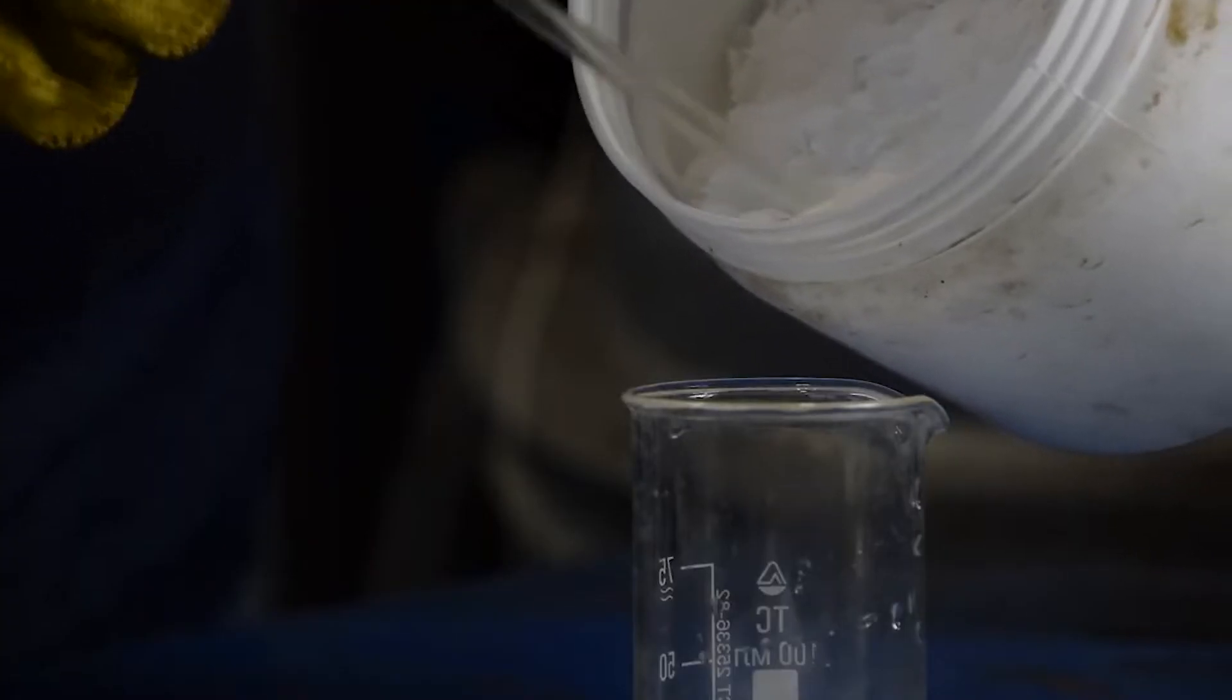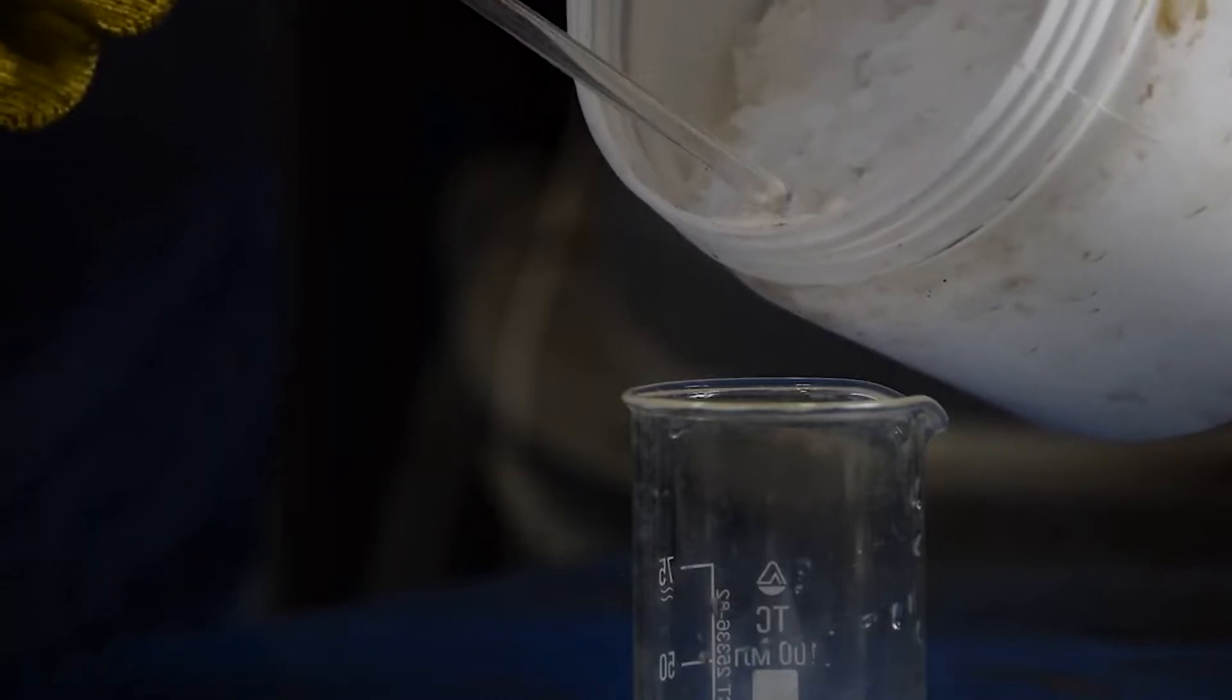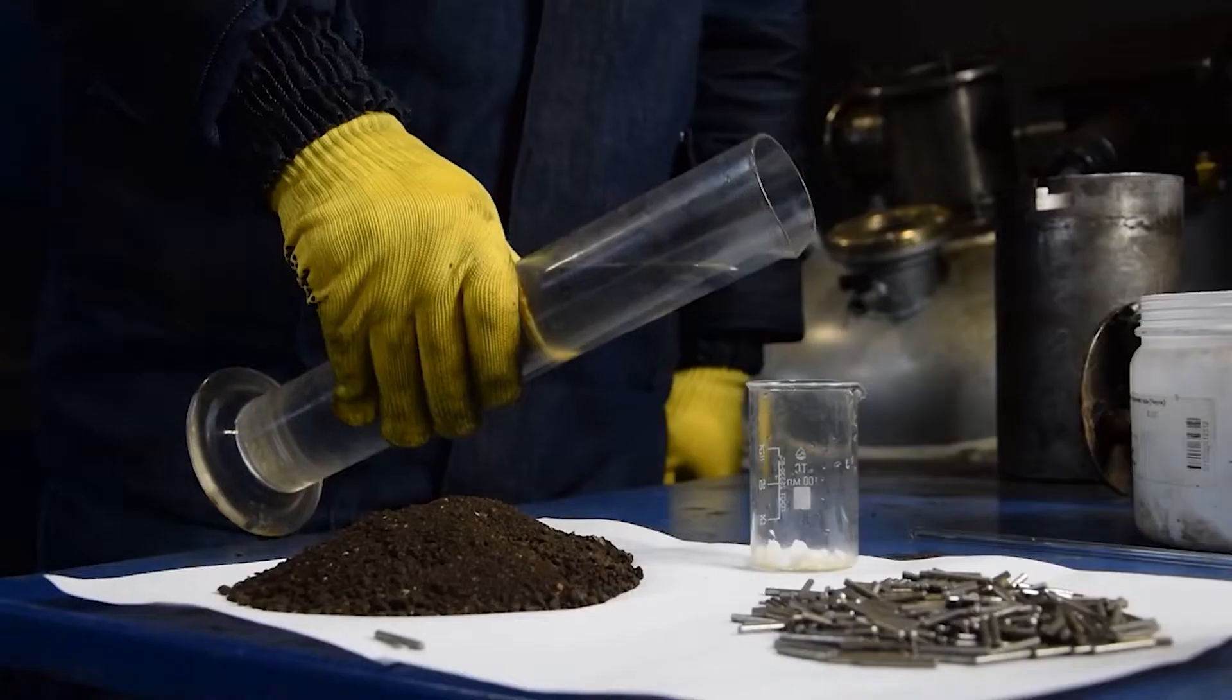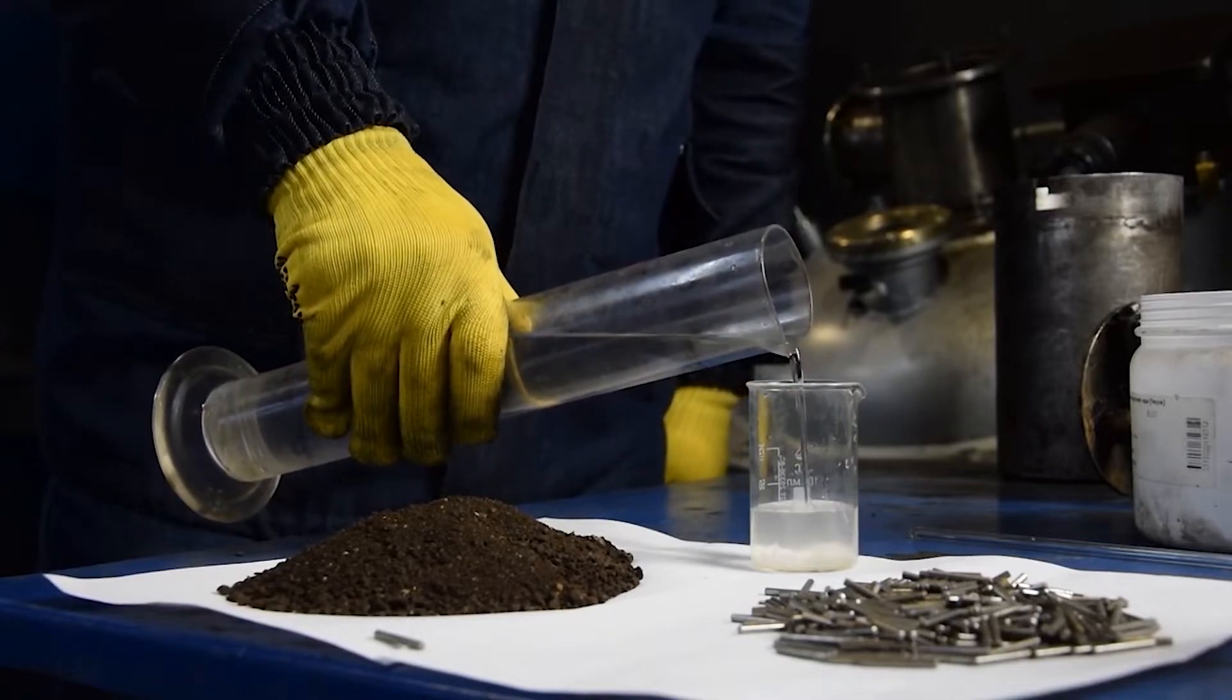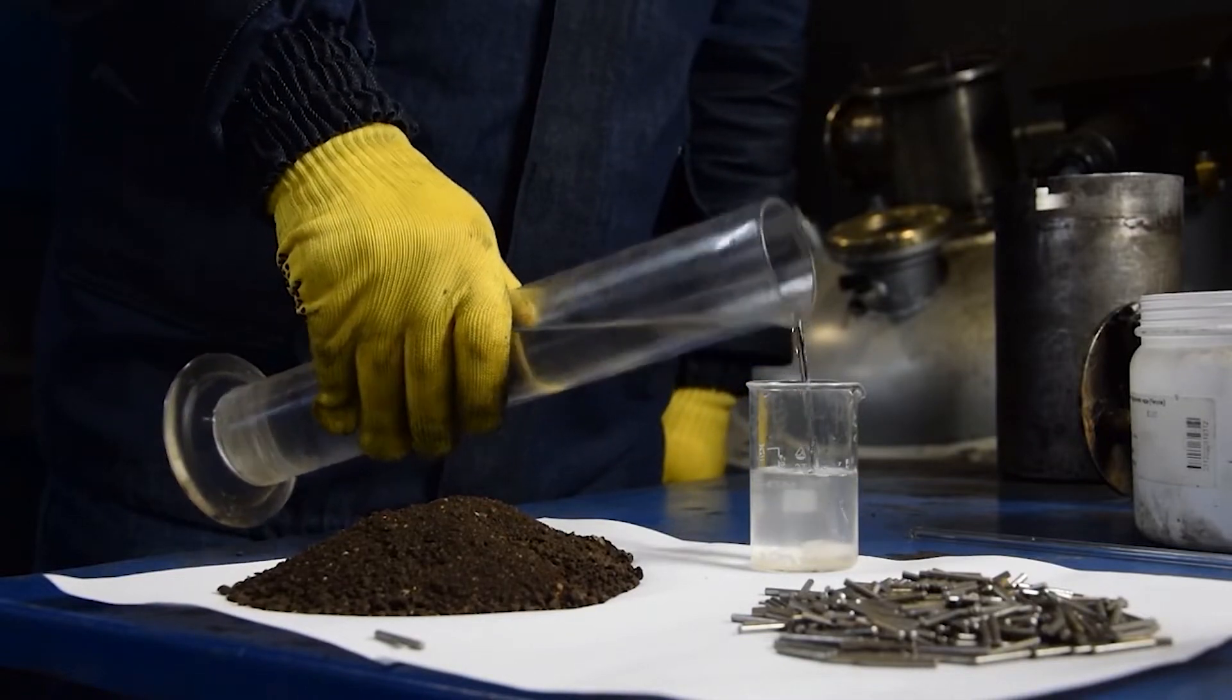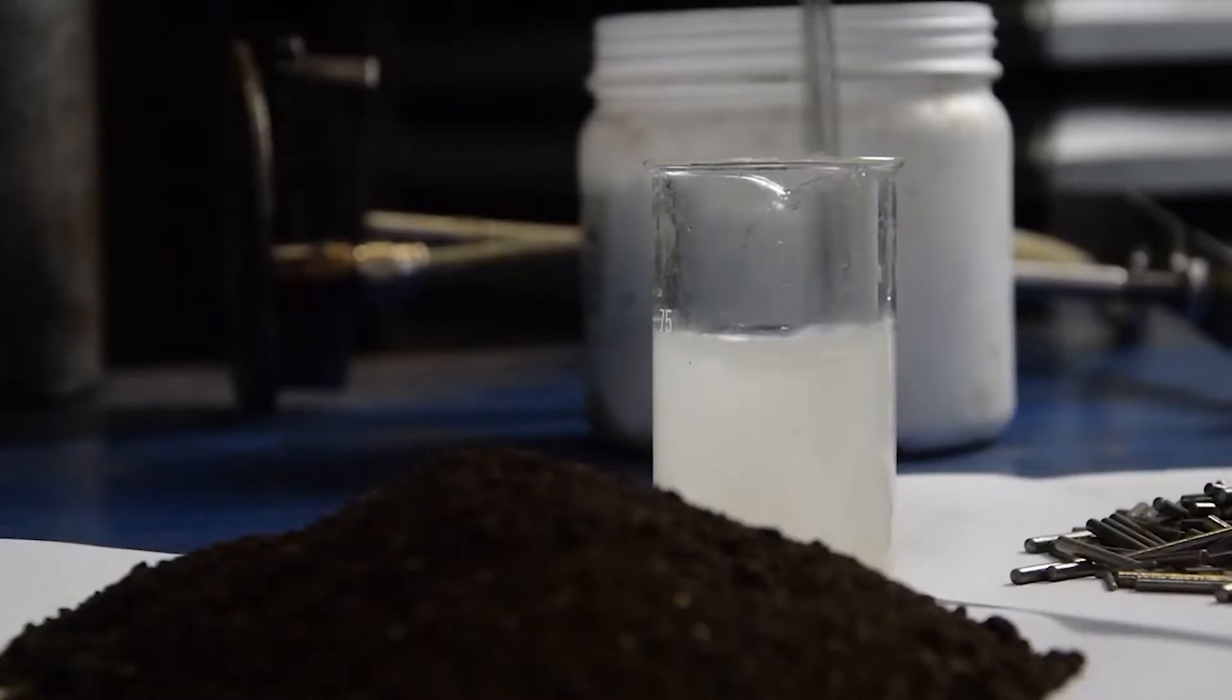The most common method for obtaining natural humat is the isolation of humic substances from fossil raw materials in the presence of alkali. In our experiment, we made a suspension by mixing peat with water and alkali to obtain humic fertilizers.